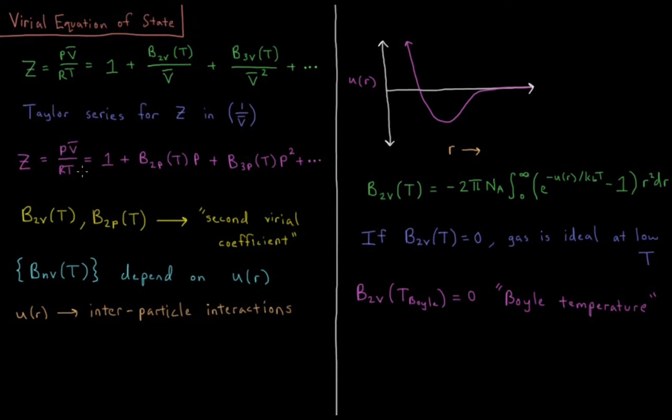So we could alternatively express this as a Taylor series in pressure, because pressure and molar volume have an inverse relationship. So we could say 1 plus B2P of T times P plus B3P of T times P squared, et cetera. It's the same kind of idea, just with slightly different coefficients, B2P instead of B2V.